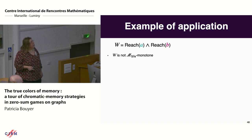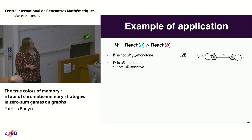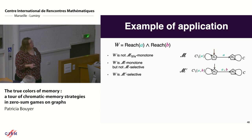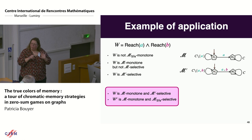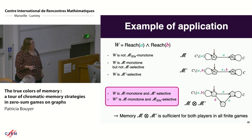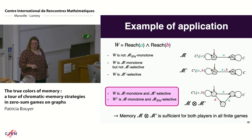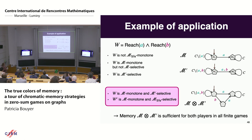As an application, consider the objective 'reach A and reach B.' We can show W is M-monotone for one skeleton and M'-selective for another. The complement satisfies analogous properties. Combining these, the product skeleton M × M' is sufficient for both players in all finite arenas. This skeleton, which one might guess from the specification, is what the theory derives: it is sufficient to win for both players under the objective of reaching target A and reaching target B.